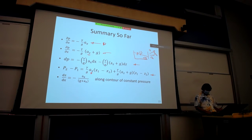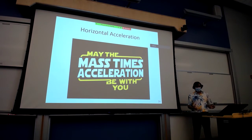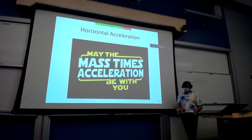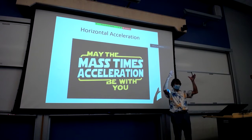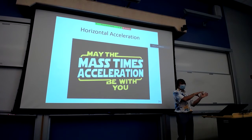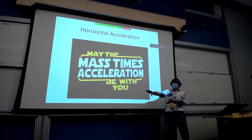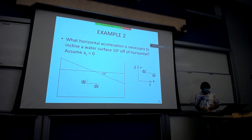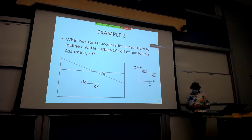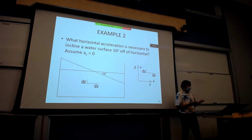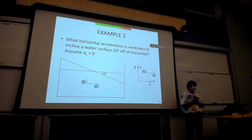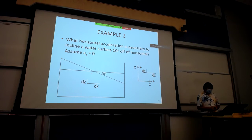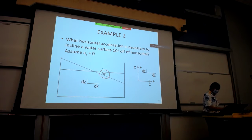That's a wrap-up of what we've been doing in the last class and a half. Last time we did an example of just vertical acceleration. The next example we're going to look at is horizontal acceleration. For example: what horizontal acceleration is necessary to incline the water surface at ten degrees off of the horizontal?